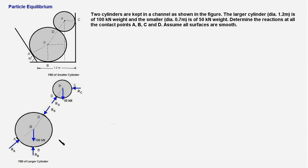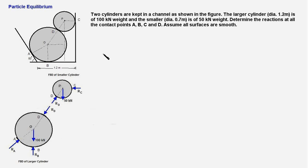Now let us find out the angles these forces make with the X and Y axes so that we could determine their components and write the equations of equilibrium. Since there are three forces acting on the smaller cylinder and only two are unknown — RC and RD — we deal with the FBD of the smaller cylinder first. Let us draw the forces acting at the center point P, the point of concurrency on which all the forces are acting. Let us say this is the X axis and this is the Y axis.